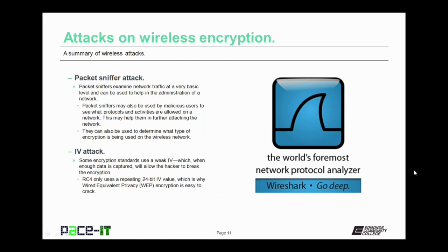Packet sniffers examine network traffic at a very basic level and can be used to help in the administration of a network. Packet sniffers may also be used by malicious users to see what protocols and activities are allowed on the network, which may help them in further attacking it. Packet sniffers can also be used to determine what type of encryption is being used on the wireless network — and you really don't want them to have that information. There is also a wireless encryption attack called the IV attack, or initialization vector attack. Some encryption standards use a weak IV, which when enough data is captured will allow the hacker to break the encryption. RC4 only uses a repeating 24-bit IV value, which is why Wired Equivalent Privacy, or WEP, encryption is easy to crack.